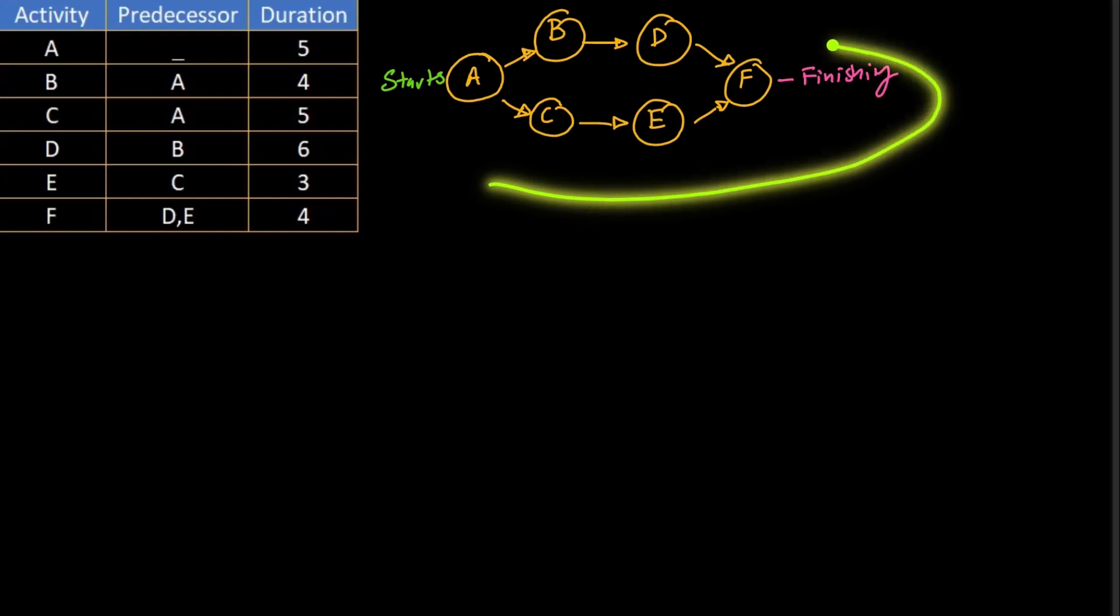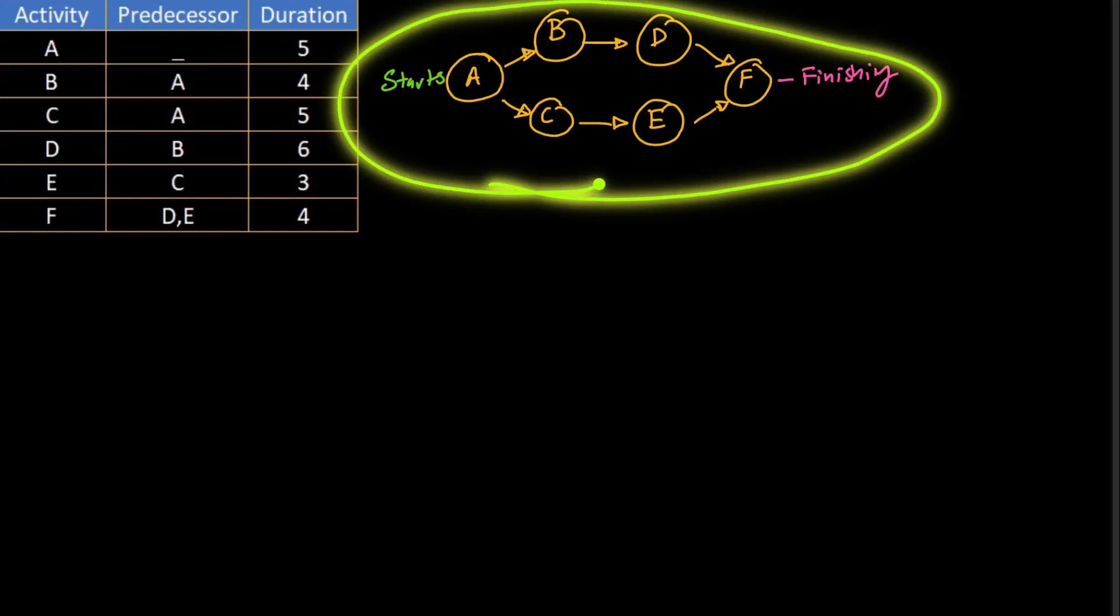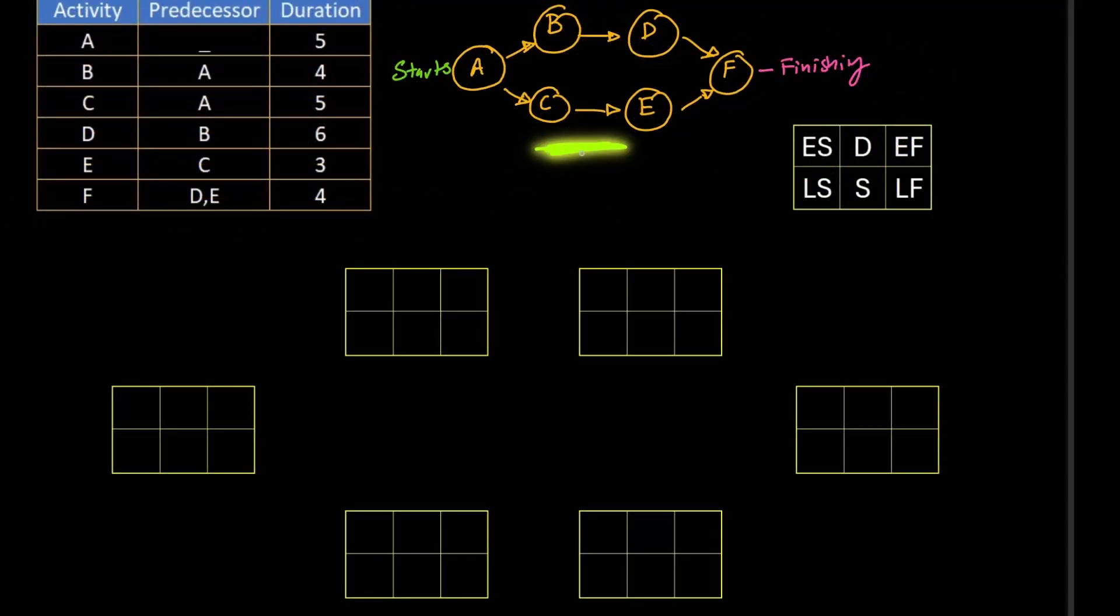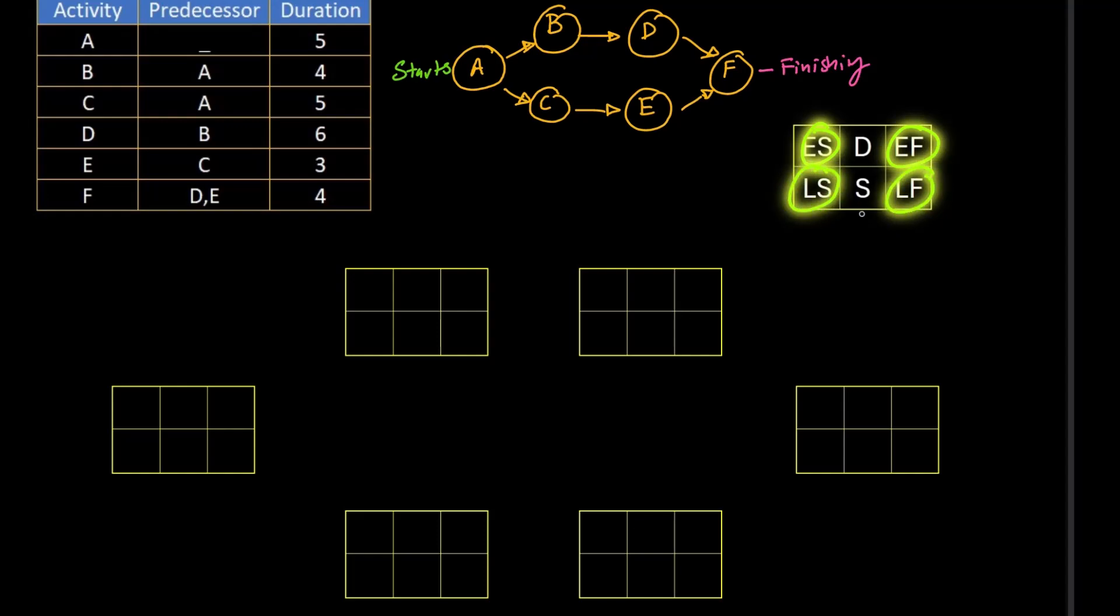Having completed this simplistic diagram, we need to make a detailed diagram of this project which will contain duration, activity and all other things. Each activity needs complete detailing and these details will be early start, early finish, late start, late finish, slack and duration of the activity.